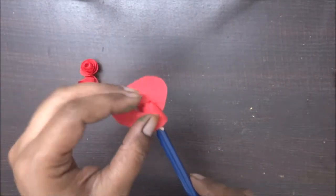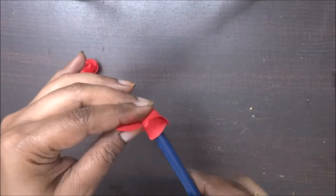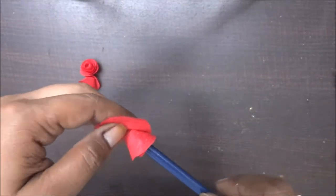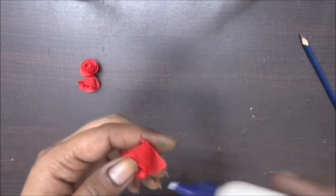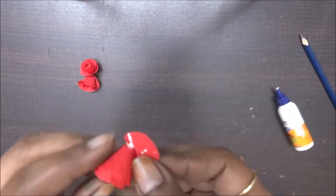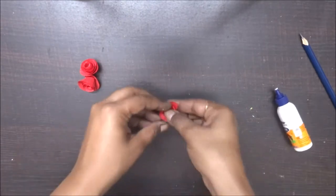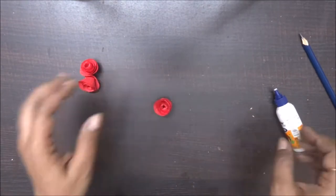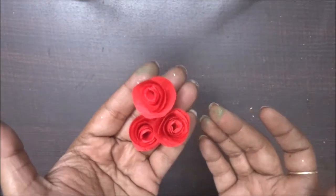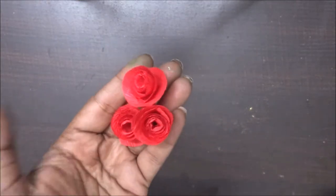Now almost all our flowers are done. So it's a small ring, so we are just making three flowers. It completely depends on what size of ring you are taking, then accordingly you can choose a number of flowers.